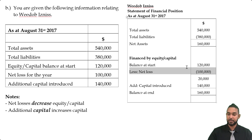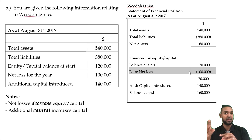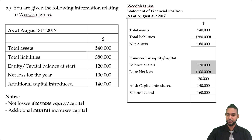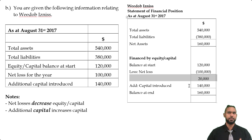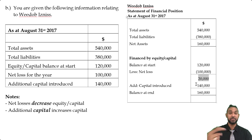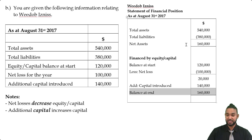Net losses are subtracted from the capital balance because to make a net loss, you have more expenses than revenue, or you didn't have enough revenue to cover your expenses. The expenses still have to be paid — either you borrow money or it comes out of the owner's capital investment. So the 100,000 net loss decreases the capital from 120 down to 20. The owner then decides to put in more money, and that's where the additional capital introduced comes into play. The 20,000 remaining plus the additional 140 brings the capital balance up to 160, which matches the net assets above.